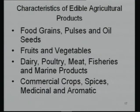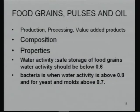The next important block is characteristics of edible agricultural products, covering four units: food grains, fruits and vegetables, dairy and poultry, and commercial crops. For food grains, production, processing, and value-added products are covered, including the composition of important grains in the Indian context — wheat, rice, and important pulses.